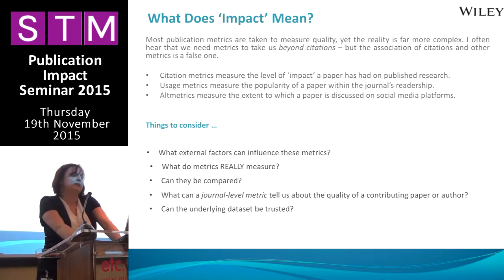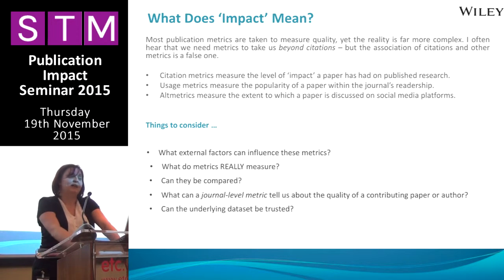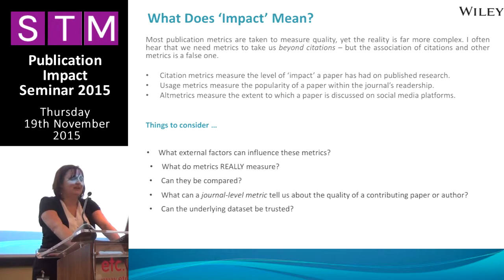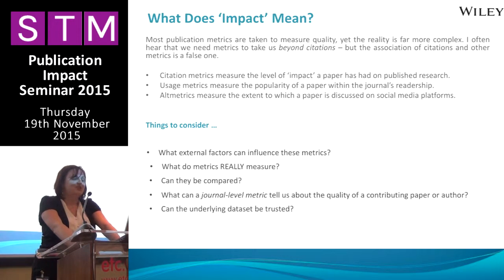For example, citation metrics don't show quality. They show the level of impact that a paper has had on published academic research. Usage metrics, again, don't show quality — they're a measure of popularity, a measure of readership. Altmetrics are also not a measure of quality. They're a measure of the extent to which a paper is discussed on social media platforms.